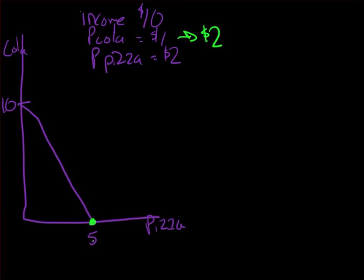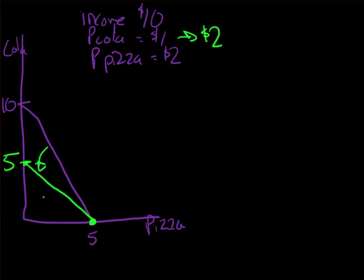Knowing that income and pizza price haven't changed, we can still consume 5 units of pizza, so that corner point does not change. When dealing with a change in the price of one good, one of the two corner points stays the same. Now looking at the maximum amount of Cola with the same income but the new price of $2, I could only consume 5 units. So this corner point changes, and drawing a line between the two gives us the new budget constraint in green.